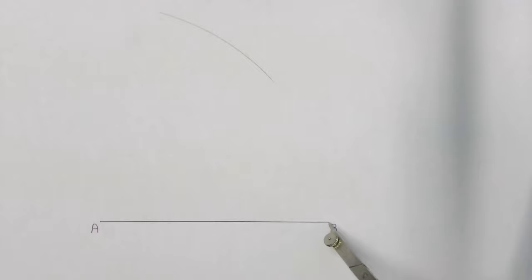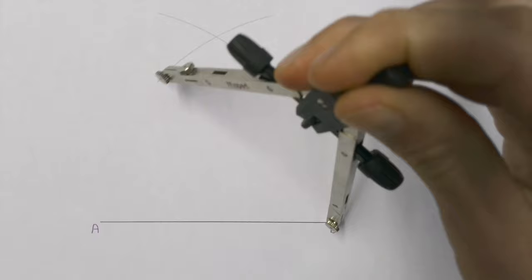Then we're going to move our compass point to point B and make another arc above line AB, making sure that those two arcs intersect each other.